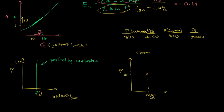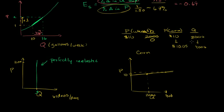If the price of corn goes up even marginally to $10.05 per bushel, all of a sudden I'm going to shift all my wheat production to corn production — going all the way to 4,000 bushels. And if the price drops to $9.95, I'd shift all production to wheat and produce no corn. So with very small percent changes in prices, we have very large percent changes in quantity supplied — this is approaching perfect elasticity.